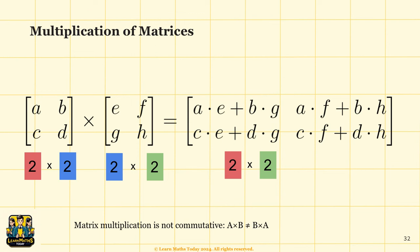Now let's try calculating the multiplication of a 2 by 2 matrix with another 2 by 2 matrix. The end result will also be a 2 by 2 matrix. For the first element — first row and first column — we have A multiplied by E, where A is from the first row, first column of the first matrix, and E is from the first row, first column of the second matrix. You continue in this pattern and so on to get the full answer.